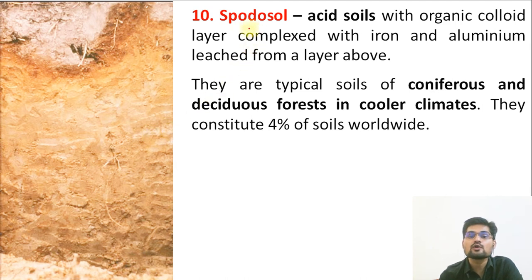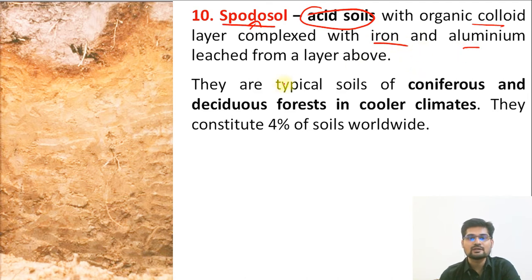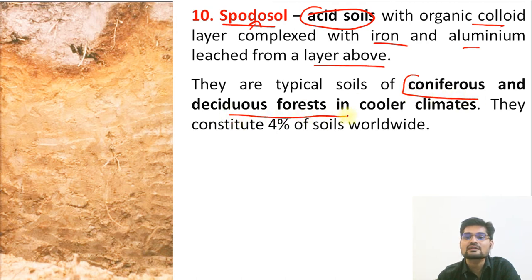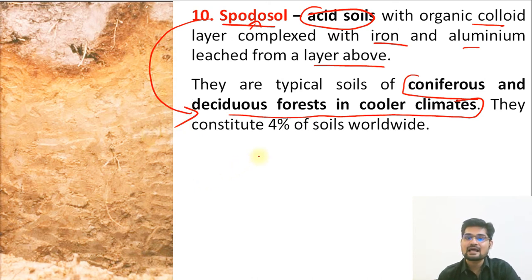The tenth order is Spodosol. The word 'spodos' means wood ash, which is acidic. These soils have an organic colloid layer mixed with iron and aluminium leached from the layer above. They are typical soils of coniferous and deciduous forests in cooler climates, comprising about 4% of world soils.